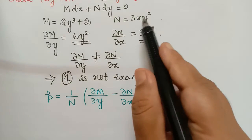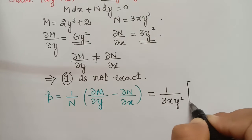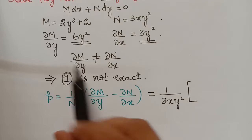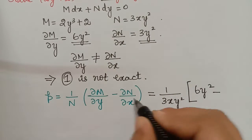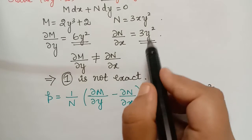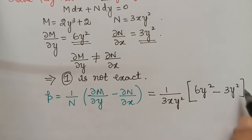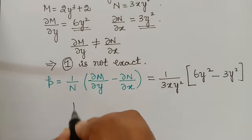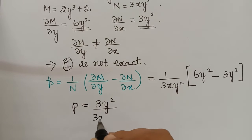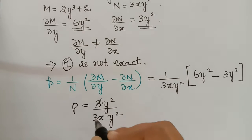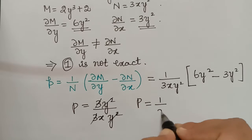N is 3xy², so P = (1/3xy²) × (6y² − 3y²) = 3y²/(3xy²). We can cancel 3 and y², so P = 1/x.